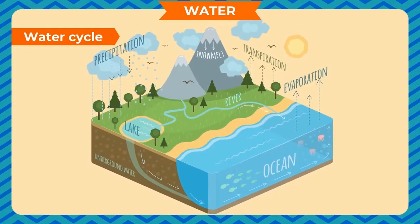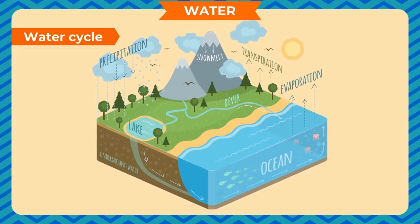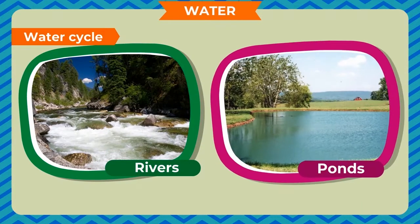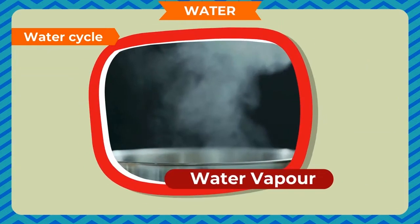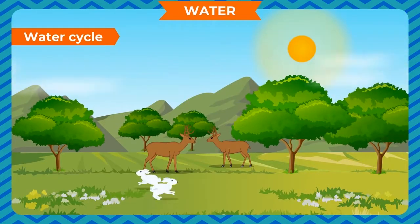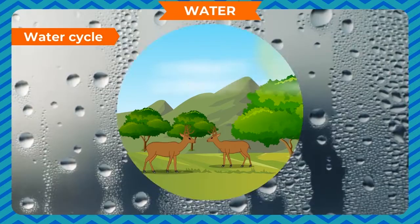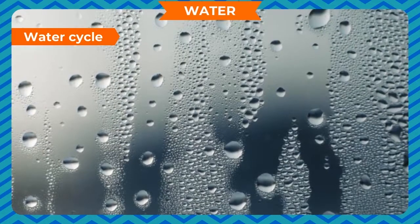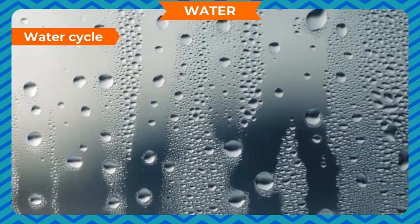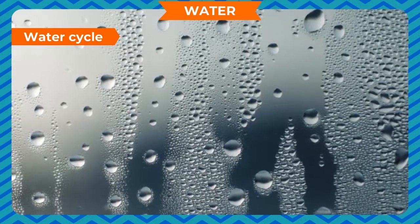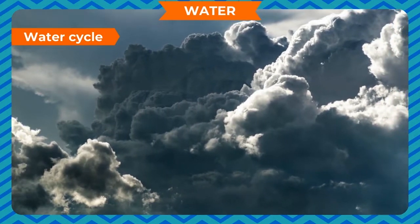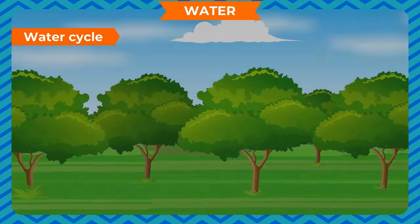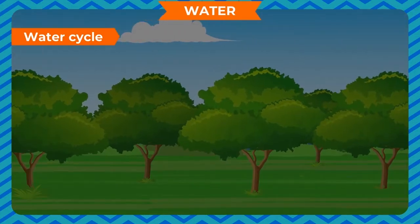Water cycle. The heat of the sun heats the water present in rivers, ponds, lakes and seas, and converts it into water vapor. This water vapor mixes with the air and rises up into the atmosphere. Where the air is cool, the water vapor condenses into small water drops, which combine together to form clouds.